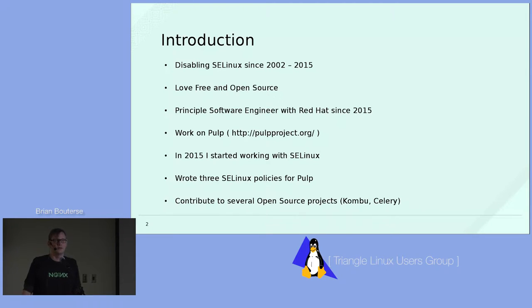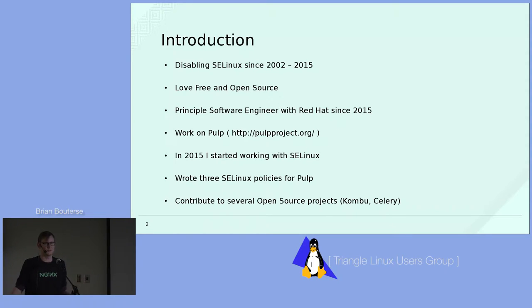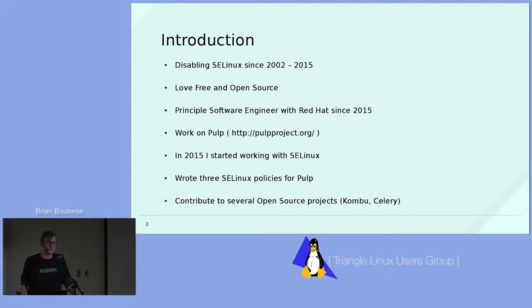I'm a principal software engineer with Red Hat since 2015. I work on a project called Pulp, along with Michael Rivnack. Pulp is a software repository management system which manages things like RPMs, Puppet modules, Python packages, OS trees, Docker containers, and a bunch of different types. It helps you sync down these packages, store them, compose them into repositories, and then host them to all of your machines.